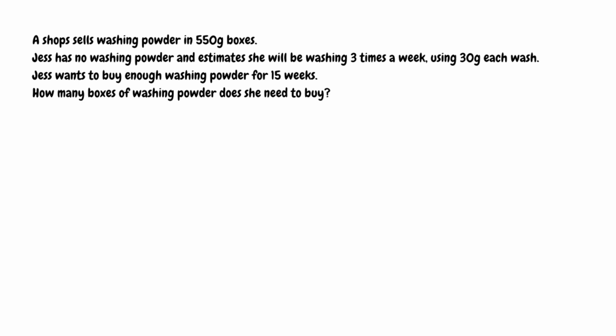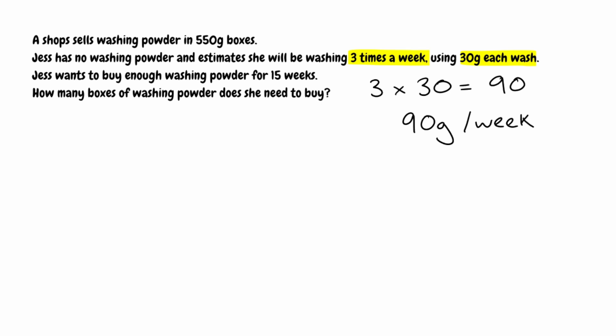For this question, a shop sells washing powder in 550g boxes. Jess has no washing powder and estimates she will be washing 3 times a week, using 30g for each wash. Jess wants to buy enough washing powder for 15 weeks — how many boxes does she need to buy? Jess is washing 3 times a week using 30g each time, so we do 3 multiplied by 30, which gives us 90. So Jess is estimated to use 90g of washing powder each week. She wants enough for 15 weeks, so we now need to do 90 multiplied by 15.